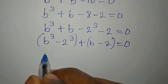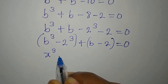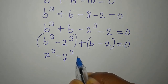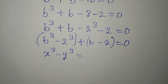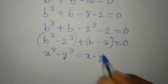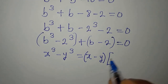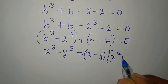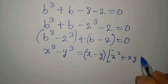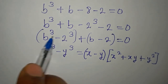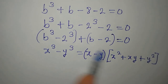Recall the difference of cubes identity: x to the power of 3 minus y to the power of 3 equals x minus y, times x squared plus xy plus y squared. We will express our grouped terms in this form.